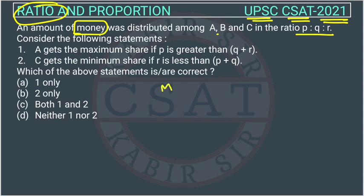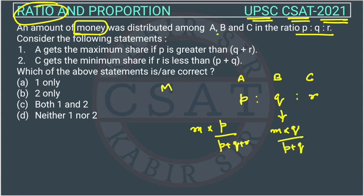So there is some amount of money, I suppose M. And there are three persons A, B, and C. And they receive money in the ratio of P, Q, R. So we know the portion of money of A will be how much? So it will be M into P upon P plus Q plus R. And how much B will get? B will get M into Q upon P plus Q plus R and C will get M into R upon P plus Q plus R.